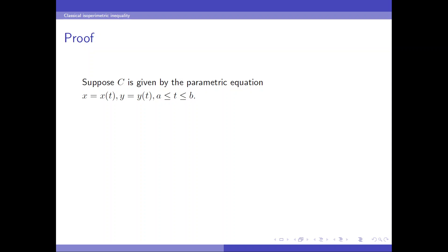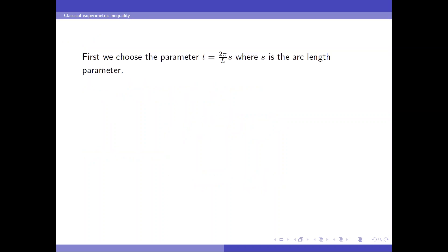Let's go over the proof. Suppose c is given by the parametric equation. Then the length can be computed using the standard formula. And by Green's theorem, the enclosed area can be also computed by a line integral, which should really be computed using parametrization.